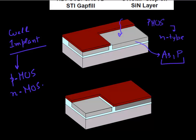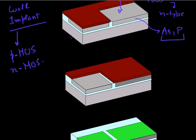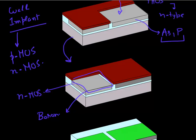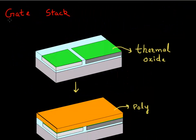Then you use another layer of resist and expose the region where you want to make your NMOS devices — your N-channel devices. For those you need a P-type substrate, so you implant this region with boron. Once you are done implanting, you do an activation anneal to activate these dopants.